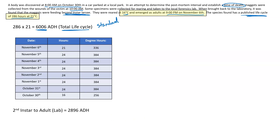We then combine all of these degree hours into accumulated degree hours — ADH from second instar to adult. Remember, they were second instar when we found them. To adult in the lab at 16 degrees, it takes — adding all these up — 2,896 accumulated degree hours. So in the lab at 16 degrees, it took 2,896 thermal energy units to rear from second instar to adult.